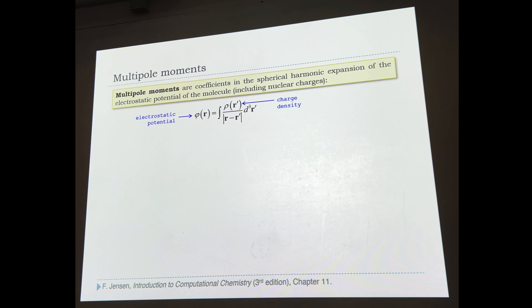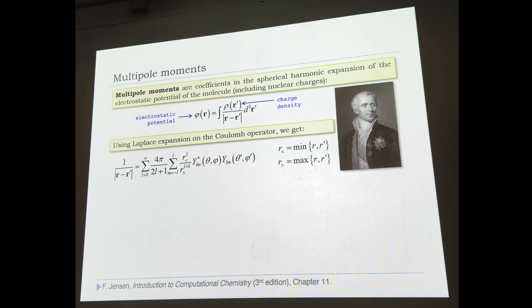This person got their giant medal, no doubt, for this equation, because it must have been an absolute horror to derive. That here is one over |r − r'|, just one over the distance between two points in space. The expansion is in spherical harmonics over the spherical rank. That is the smaller distance of r and r', that is the greater. These are the spherical harmonics of the reference points, and these are the spherical harmonics pertaining to the density of our electric charge.